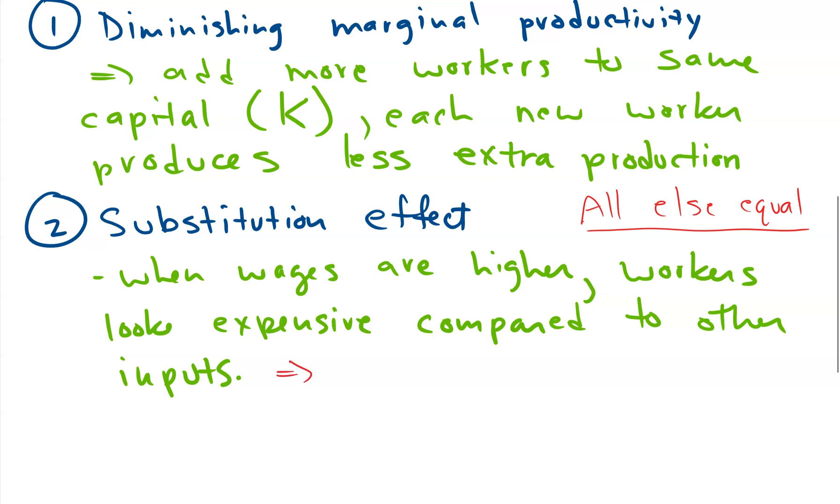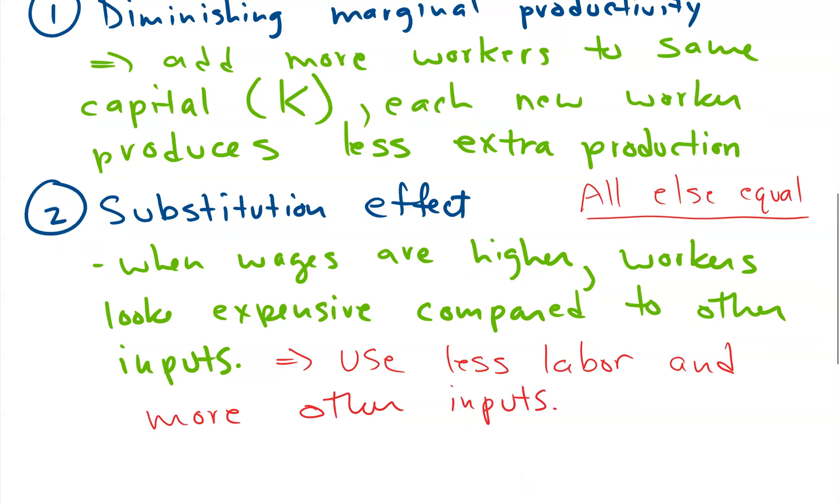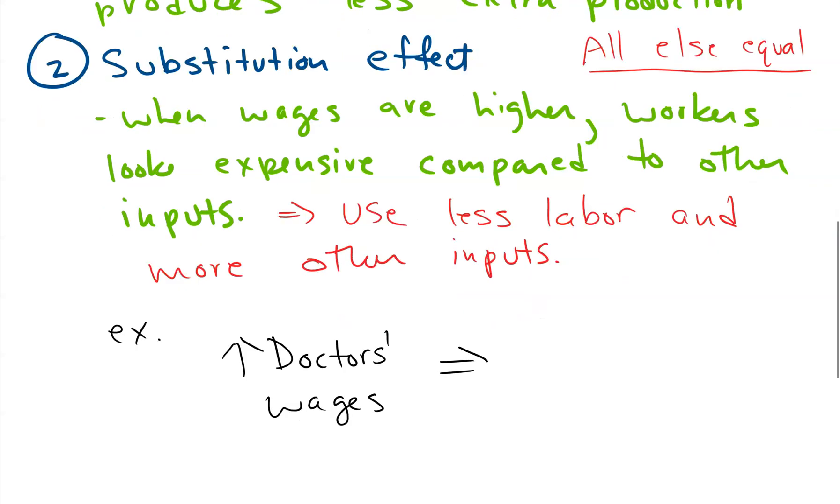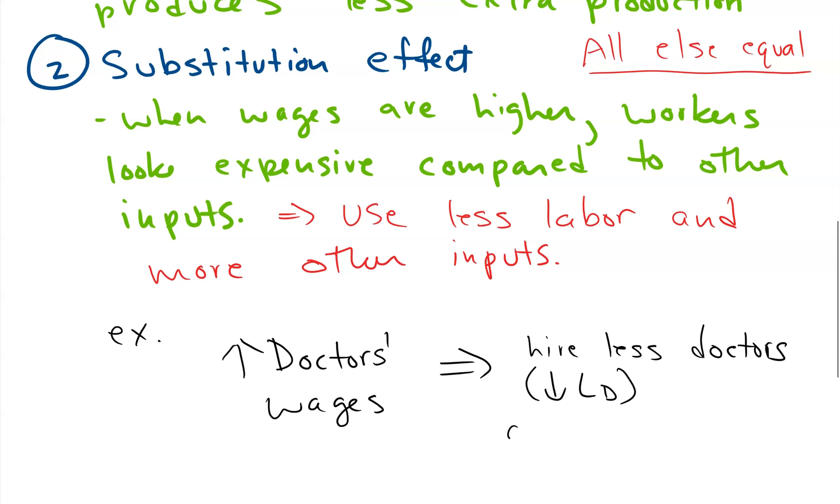You'll want to use less labor, more other inputs. Or if this is a particular type of labor, you might use less of this type of labor and more of different types of labor. For example, if you saw the wages of doctors go up, then this may lead us to want to hire less doctors, and that would be shown as a fall in labor demand along the curve, and more nurse practitioners. That's the substitution effect.